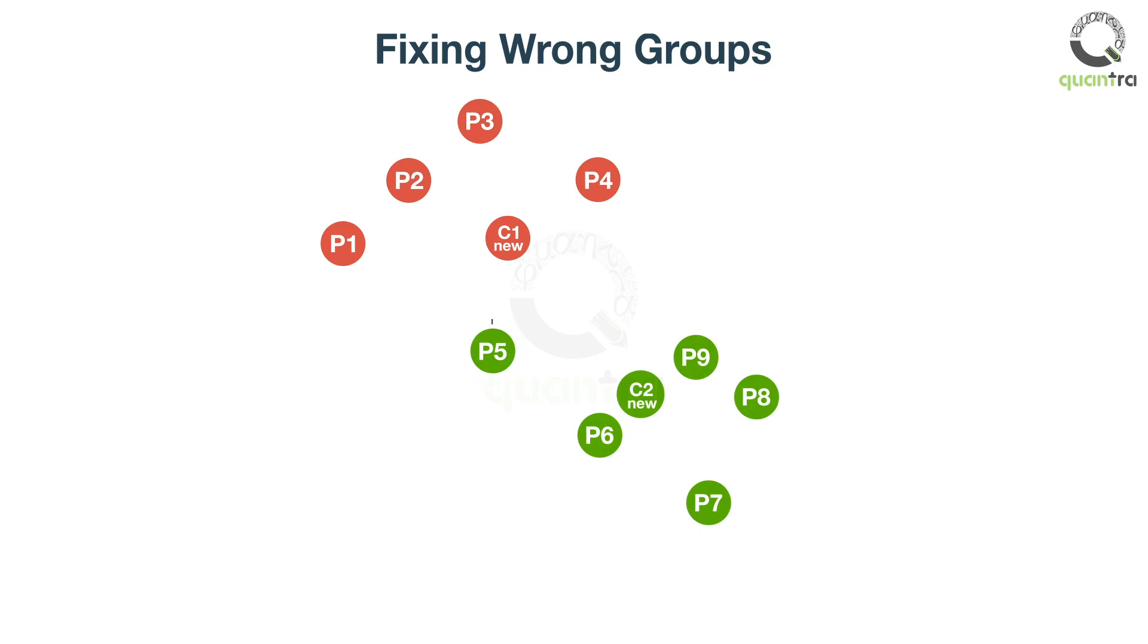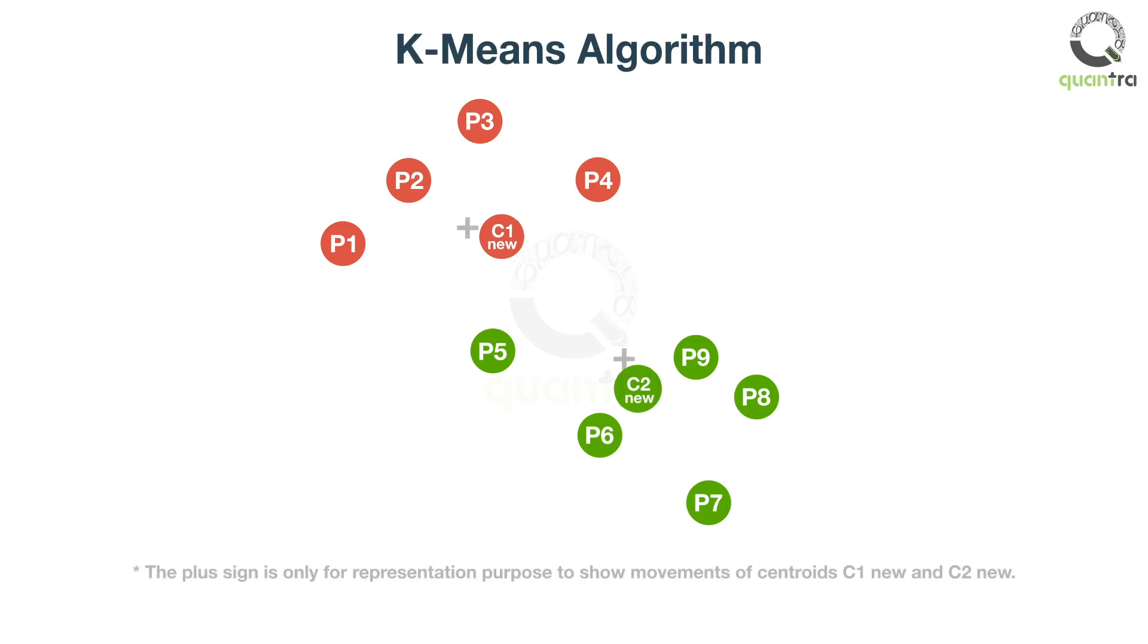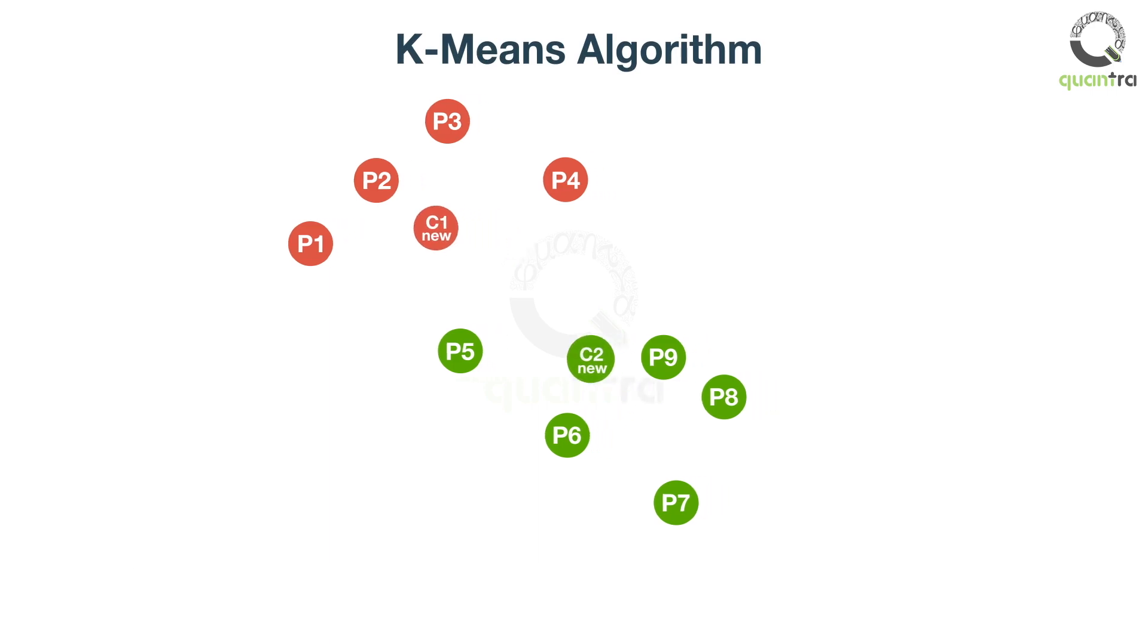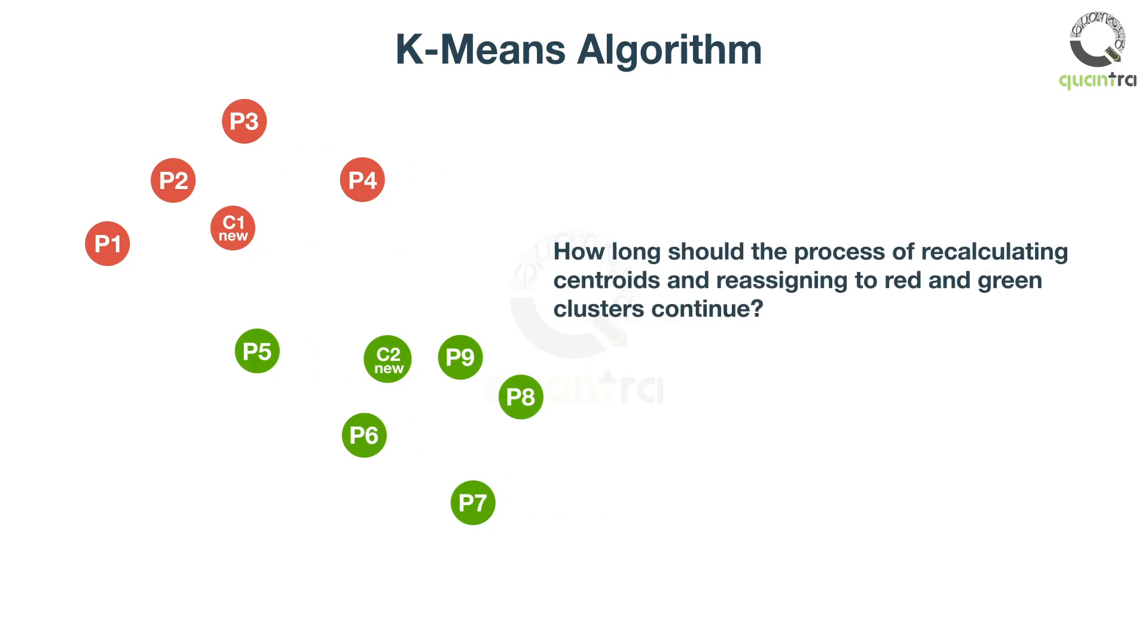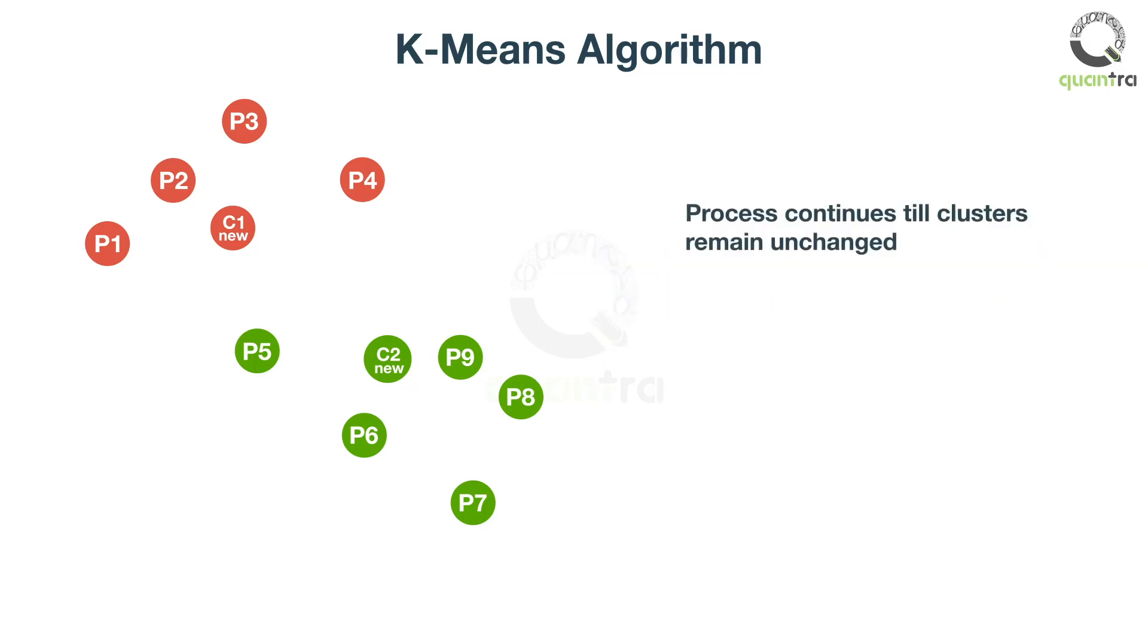We see that this point which was earlier in the red group shifted to the green group. The k-means will calculate new centroids again and repeat the process. But how long should the process of recalculating centroids and reassigning to red and green clusters continue? The process will continue until the clusters remain unchanged or a fixed number of iterations are reached.